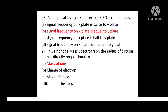Question No. 23: An elliptical Lissajous pattern on CRO screen means? Option A: Signal frequency on X plate is twice that of Y plate. Option B: Signal frequency on X plate is equal to the Y plate. Option C: Signal frequency on X plate is half that of Y plate. Option D: Signal frequency on X plate is unequal to the Y plate. Correct answer is Option B: Signal frequency on X plate is equal to the Y plate.